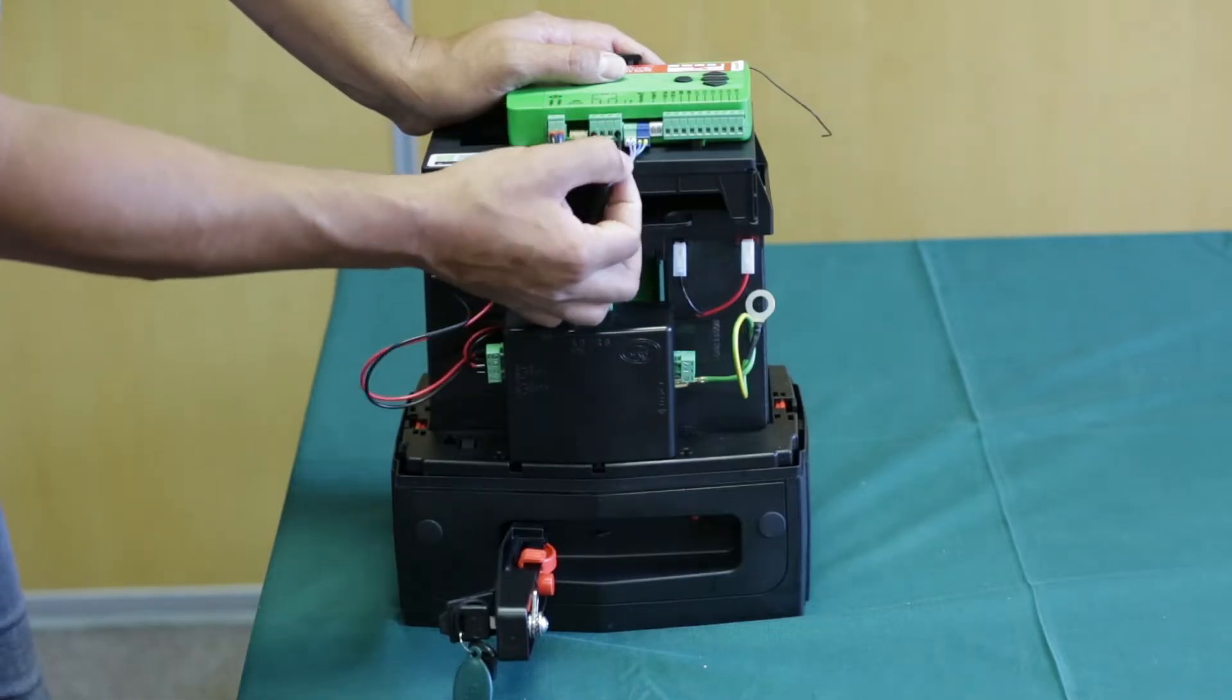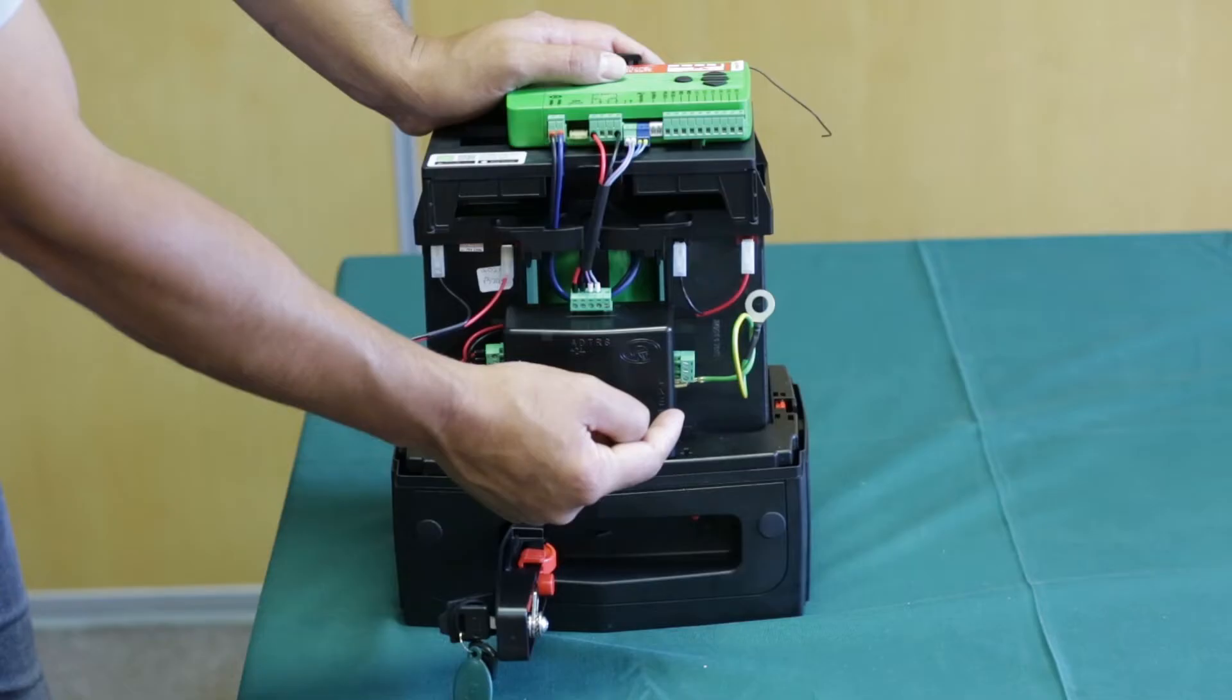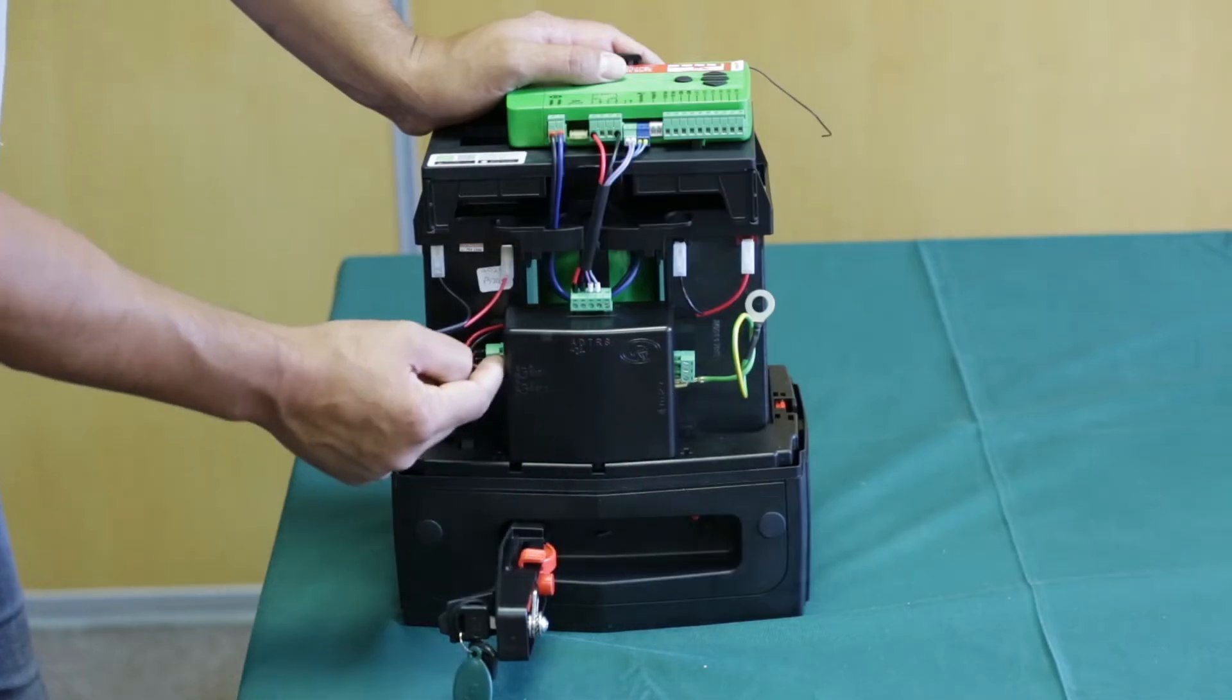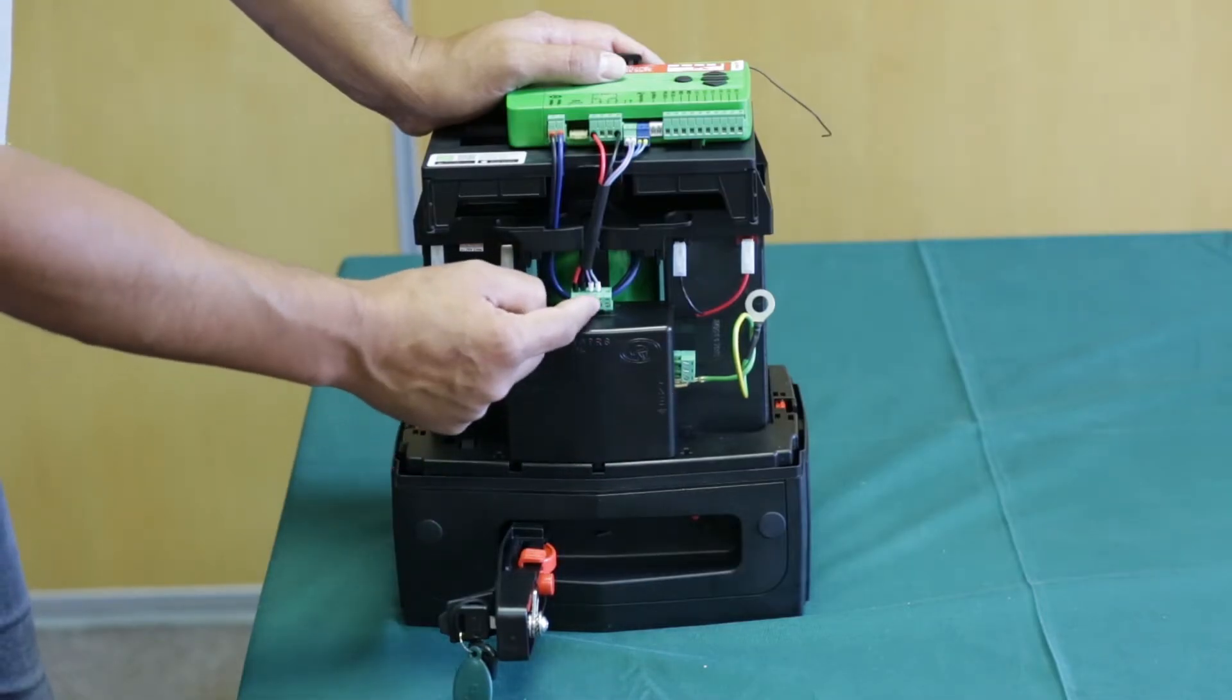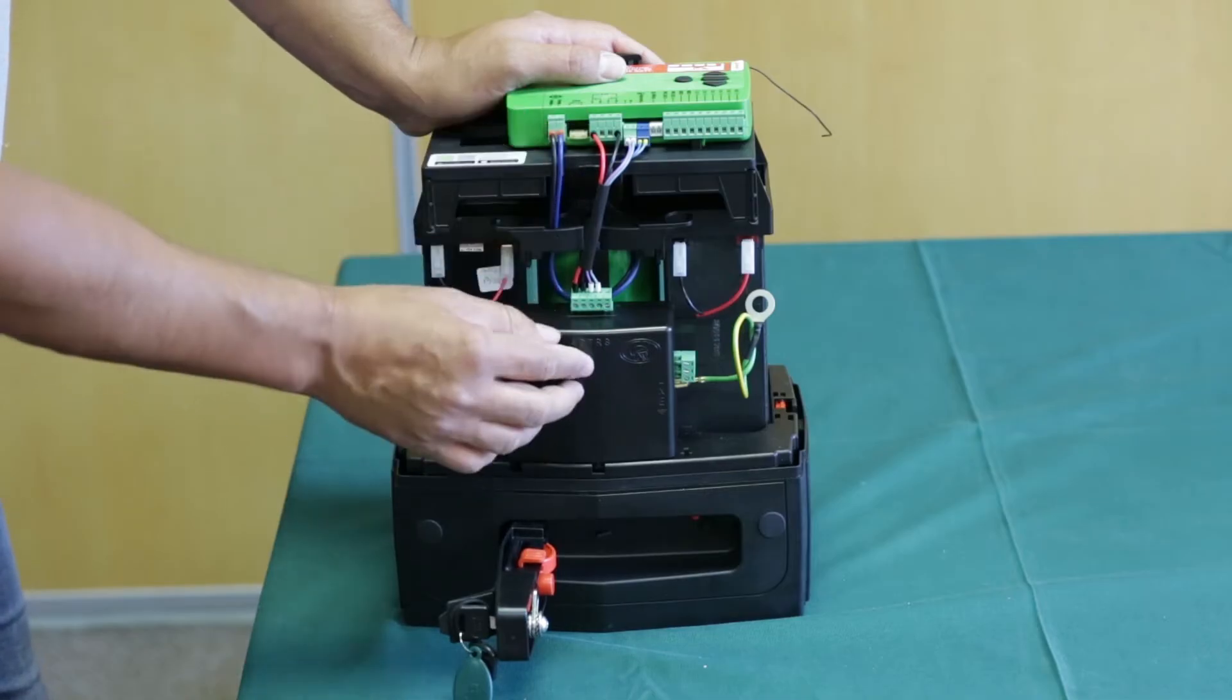We're also communicating with the power supply in order for us to get mains voltage input, the current that we're drawing from the batteries, and the current that the power supply is delivering to the batteries or to the system.